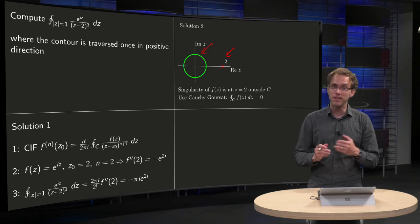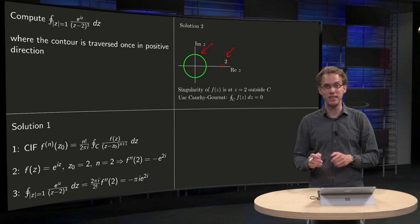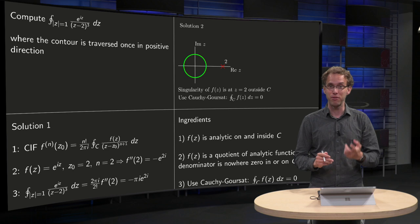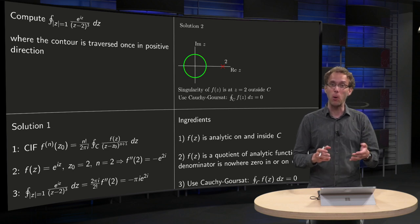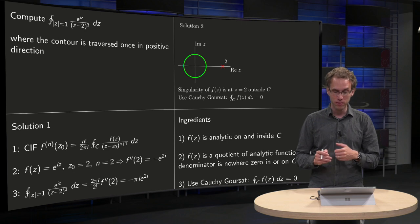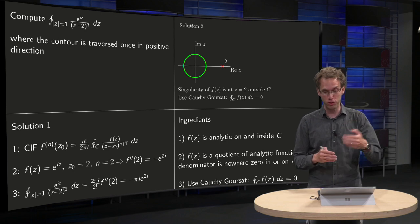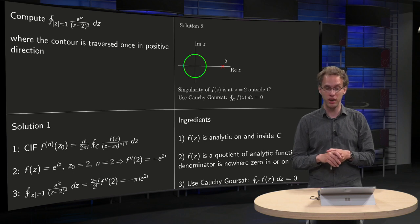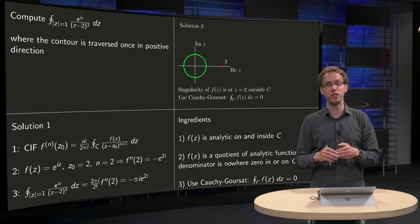Almost, but not entirely. The singularity is indeed outside of C, but what you need is that f(z) is analytic on and inside C. Well, that's the case here. f(z) is a quotient of analytic functions and the denominator is nowhere zero in C or on C.